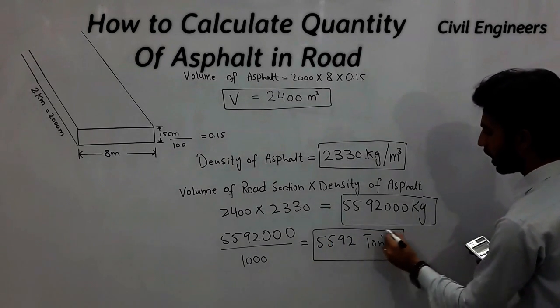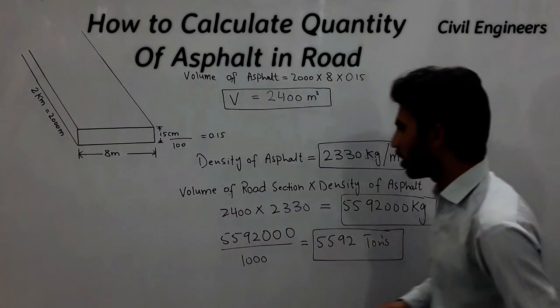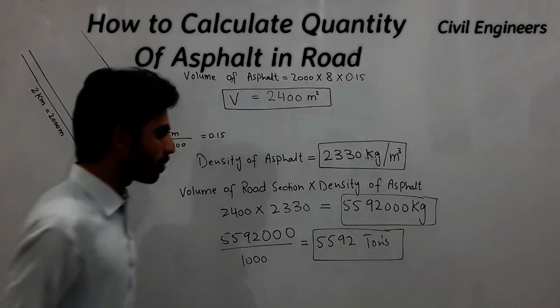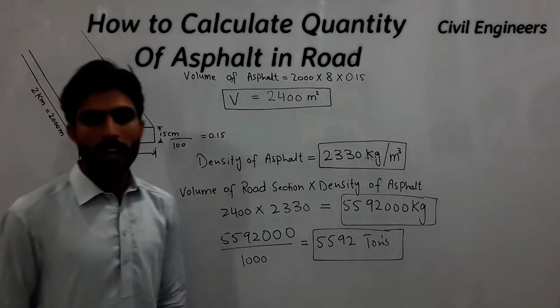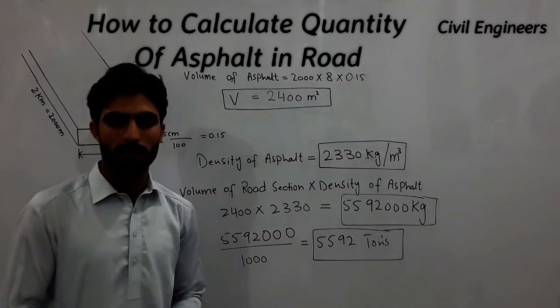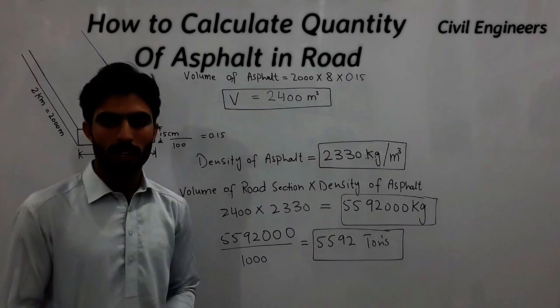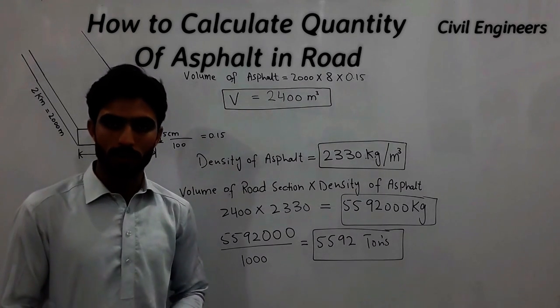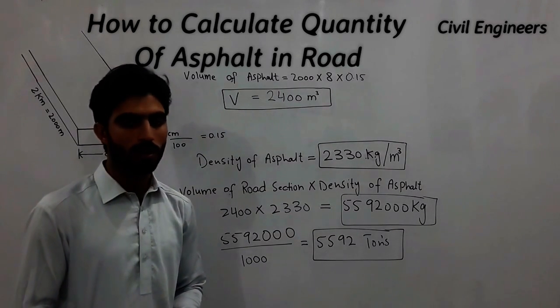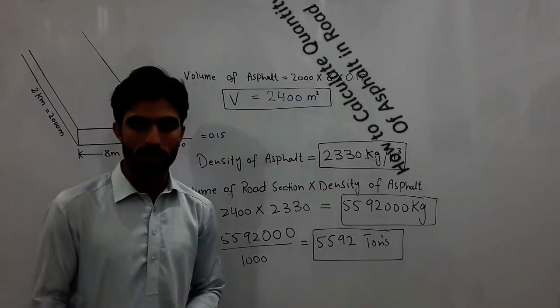The quantity for the asphalt is 5592 tons. This is your topic for today: how to calculate quantity for the asphalt and road. If you like my video, please subscribe to my channel for daily update videos. All the best, take care, bye.